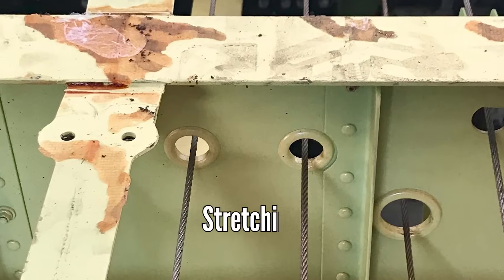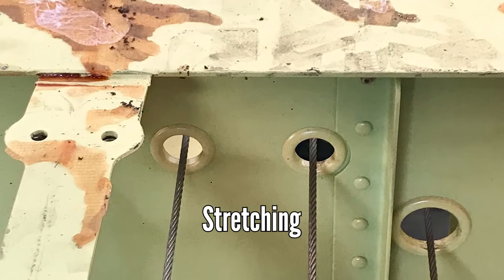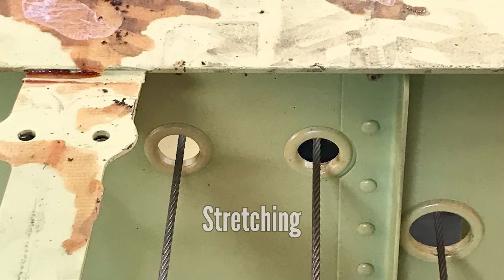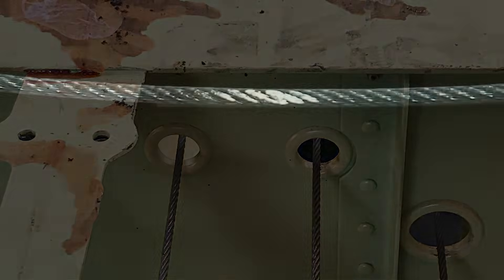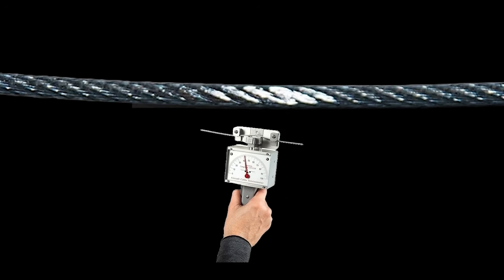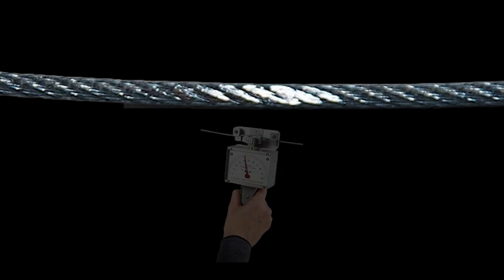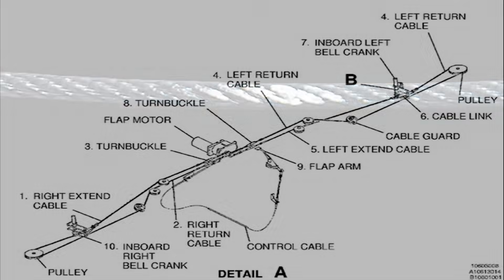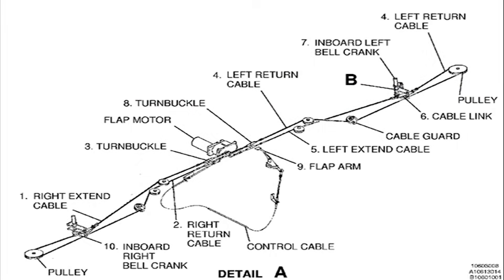Stretching: Continuous loading and unloading of cables over time can cause them to stretch. This leads to a loss of tension, reducing the effectiveness of the controls, and may also cause misalignment of the flight surfaces.